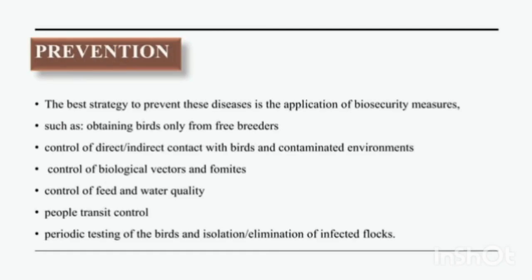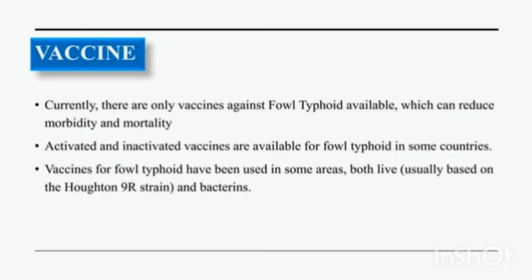This disease can be prevented by improving biosecurity measures, such as obtaining birds only from disease-free breeders, controlling direct and indirect contact with birds and contaminated environments, controlling biological vectors and fomites, controlling feed and water quality, people transit control, periodic testing of birds, and isolation and elimination of infected flocks. In the United States, it is mandatory to vaccinate birds against Salmonella. Vaccines against fowl typhoid are available in some countries in the form of inactivated and live attenuated vaccines.